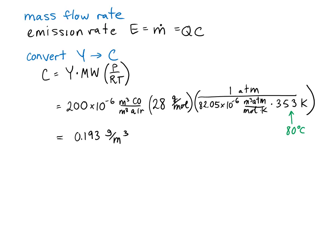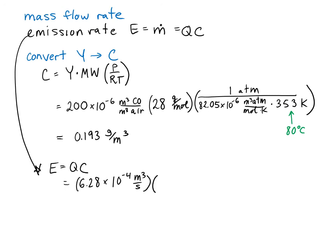Now substituting into the emission rate equation: E = Q × C = 6.28 × 10⁻⁴ m³/s × 0.193 g/m³. That gives an emission rate of 1.21 × 10⁻⁴ grams of carbon monoxide per second.